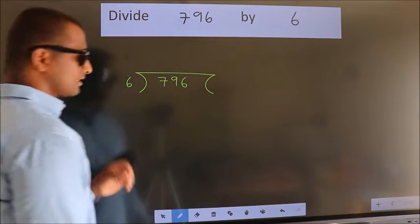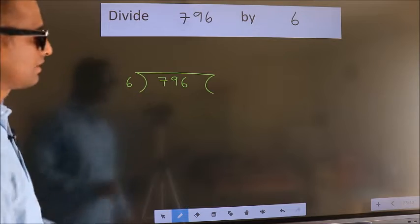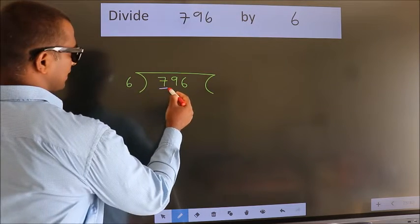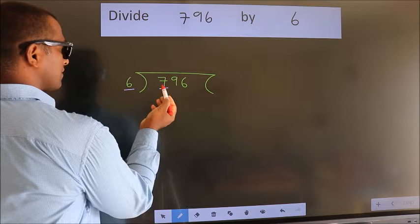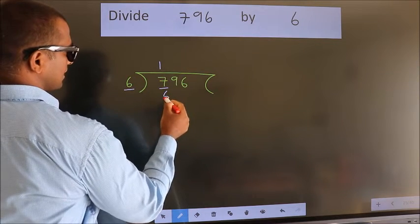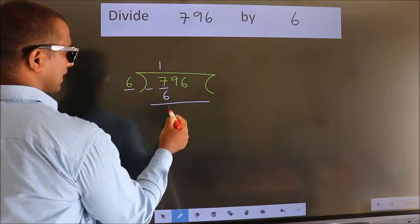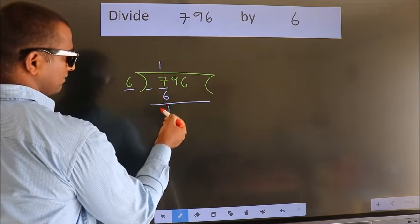This is your step 1. Next, here we have 7. Here 6. A number close to 7 in 6 table is 6 ones, 6. Now we should subtract. We get 1.